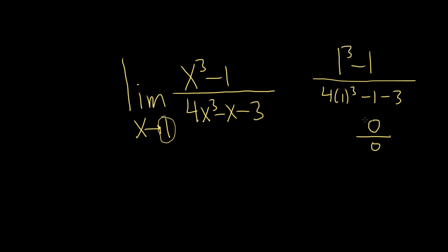So whenever you get one that looks like this, 0 over 0, you can use something called L'Hopital's rule. So L'Hopital's rule basically says whenever you have 0 over 0 or infinity over infinity, you rewrite your limit like this, and you just take the derivative of each piece.